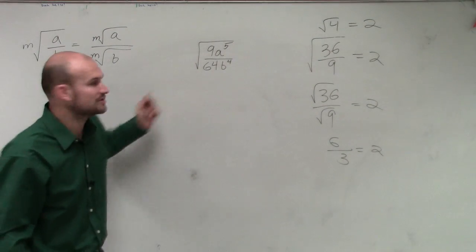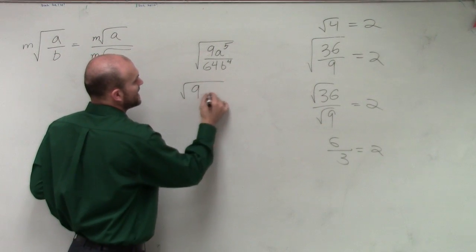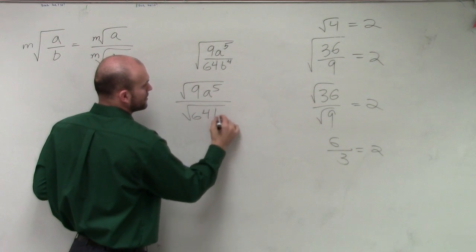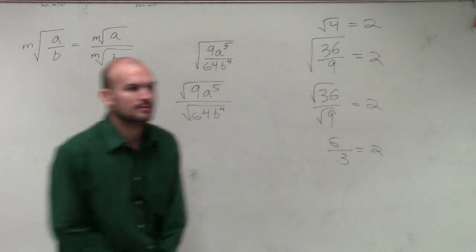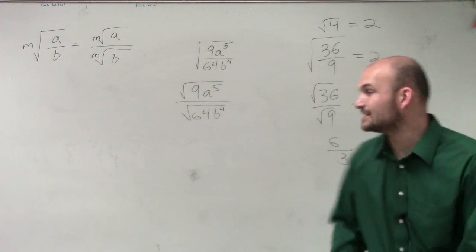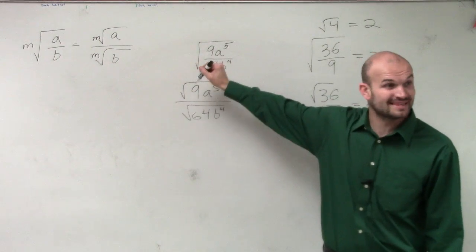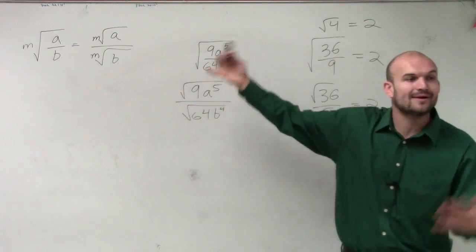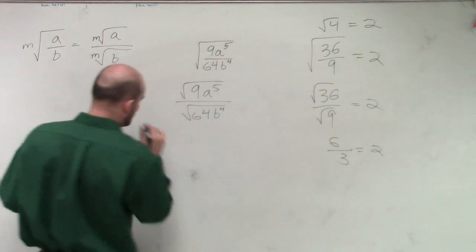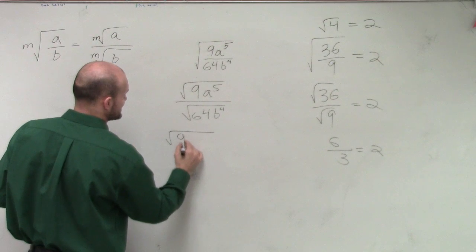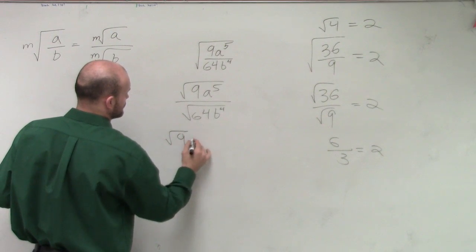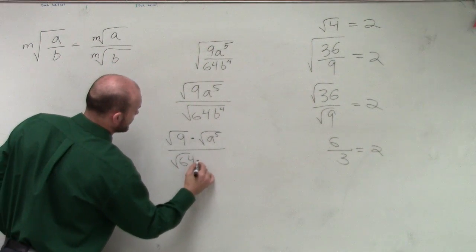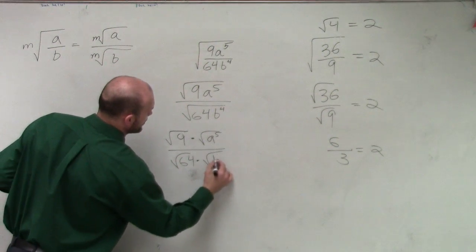So now this is square root. We know that this is the square root of 9a to the fifth divided by the square root of 64b to the fourth. When you look at this, you can see that I can split these up even further, right? Because this is the product rule. First I used the quotient rule, now I can use the product rule to split that up further. She has the square root of 9 times the square root of a to the fifth, divided by the square root of 64 times the square root of b to the fourth.